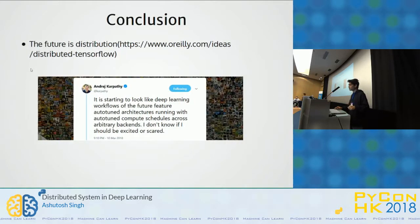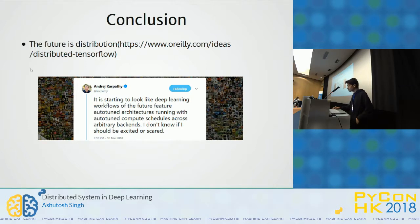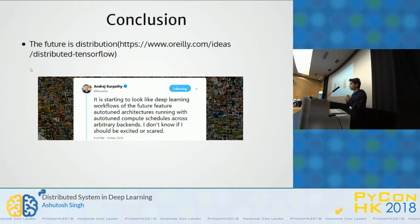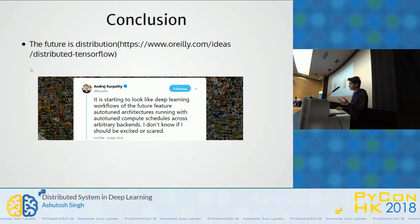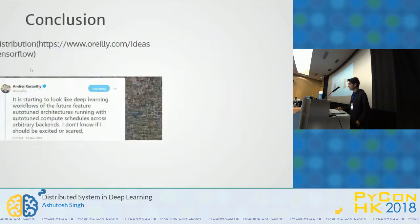In conclusion, I'd like to quote Andrej Karpathy, whom I follow a lot. He said: 'It's starting to look like the deep learning workflow of the future will feature auto-tuned architectures running with auto-tuned compute schedules across arbitrary backends.' What he's trying to say is that with such a large amount of data and computation, we need to auto-tune it to achieve maximum accuracy. I don't know if I should be excited or scared, but it's pretty great.